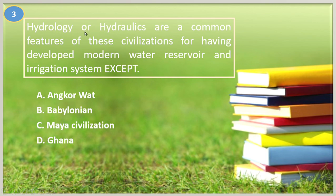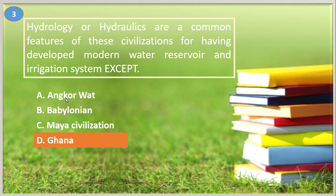Number three. Hydrology or hydraulics are common features of these civilizations for having developed modern water reservoirs and irrigation systems — EXCEPT: A. Angkor Wat, B. Babylonian, C. Maya civilization, D. Ghana. The answer is D, Ghana. Angkor Wat is famous for temple and irrigation systems. Babylon was famous for the Hanging Gardens and hydraulics. The Mayans are also famous for irrigation systems. So the answer is Ghana.